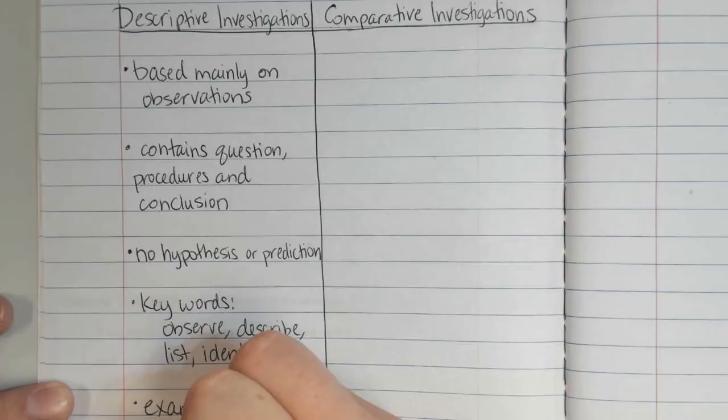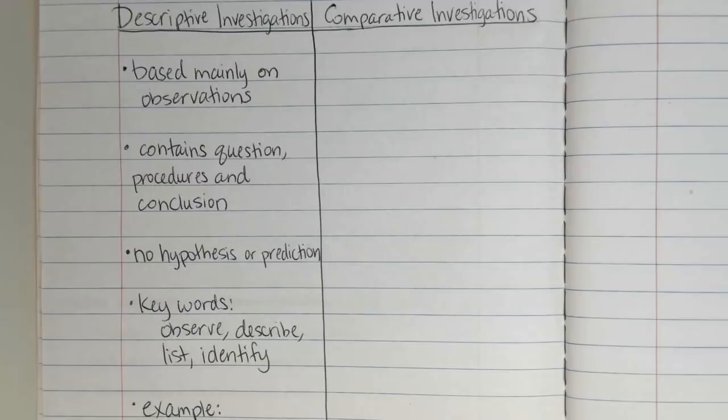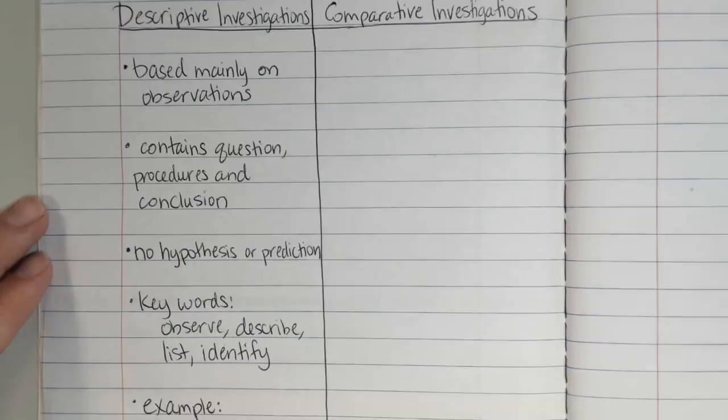The last thing I'm going to add on my t-chart is an example. When you finish this video, there is a link below the video in Schoology and it takes you to a page from Texas Gateway, a website with a lot of information. About halfway down the page it also has a spot for you to check your understanding, where it gives you different examples and you decide whether they are descriptive or comparative. I'm going to leave the example section blank, and after you've completed that check your understanding, you're going to record an example of a descriptive investigation from that page.